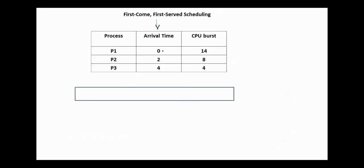Suppose that not all the processes were in the ready queue at the same time: Process 2 arrives at time 2, and Process 3 arrives at time 4. In this case, first Process 1 is scheduled from 0 to 14, then Process 2 finishes at 22, then Process 3 finishes at 26.